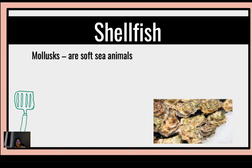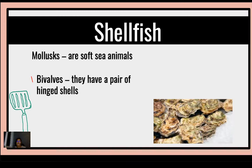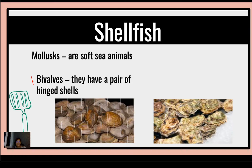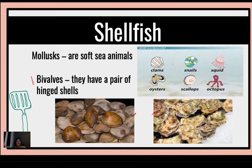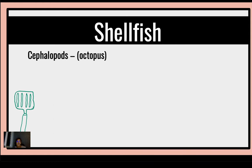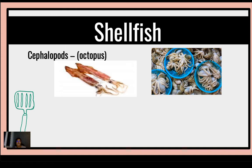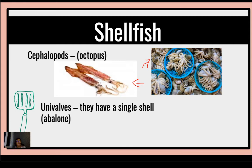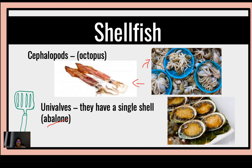For the shellfish, molluscs are soft sea animals. They can be classified into: number one, bivalves — they have a pair of hinged shells, for example clam shells, oysters, which in Filipino we call tahong, clams, snails, squid, octopus, scallops. They always have a pair. We also have the cephalopods — an example is the octopus, which we can see in the wet market. Then we also have the univalves — they have a single shell. The abalone is an example, which we often see featured in Korean dramas.